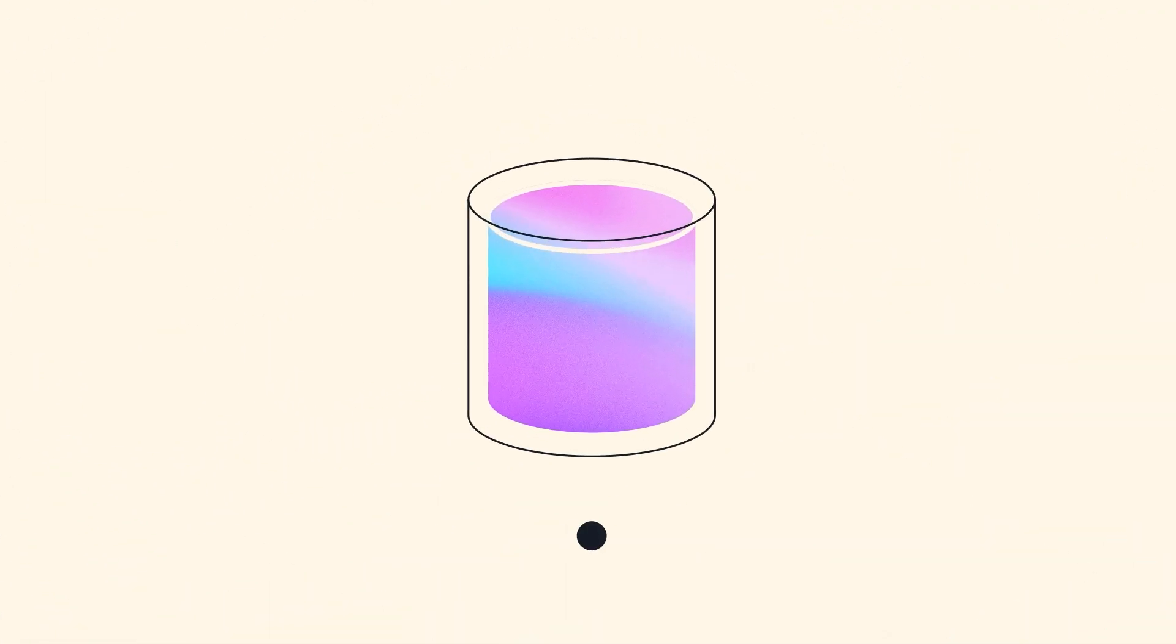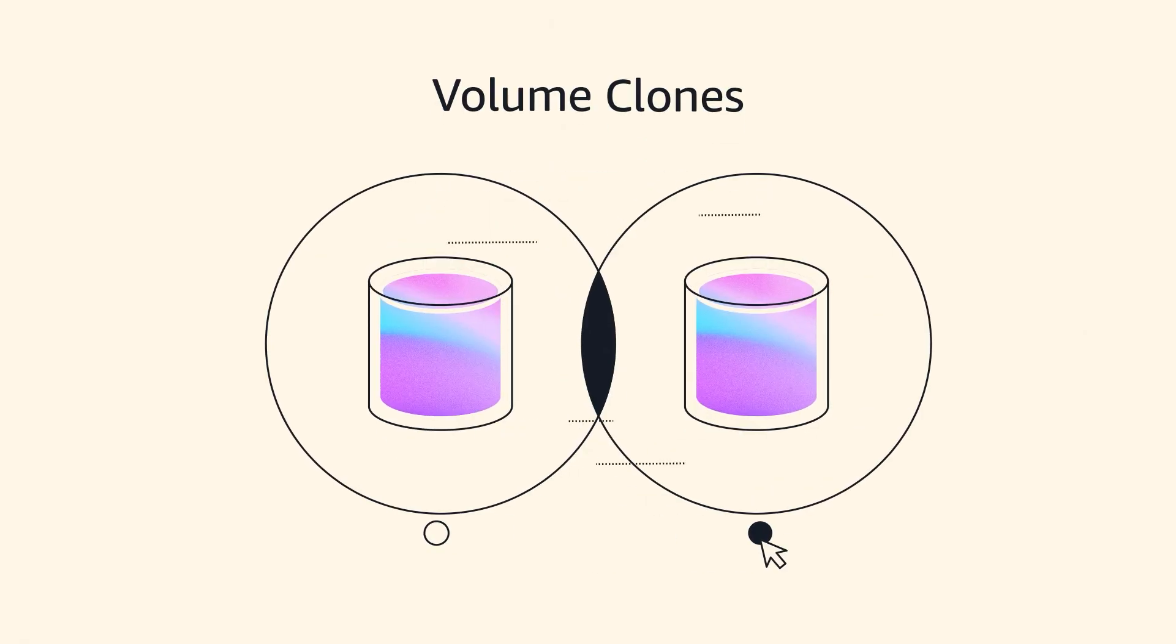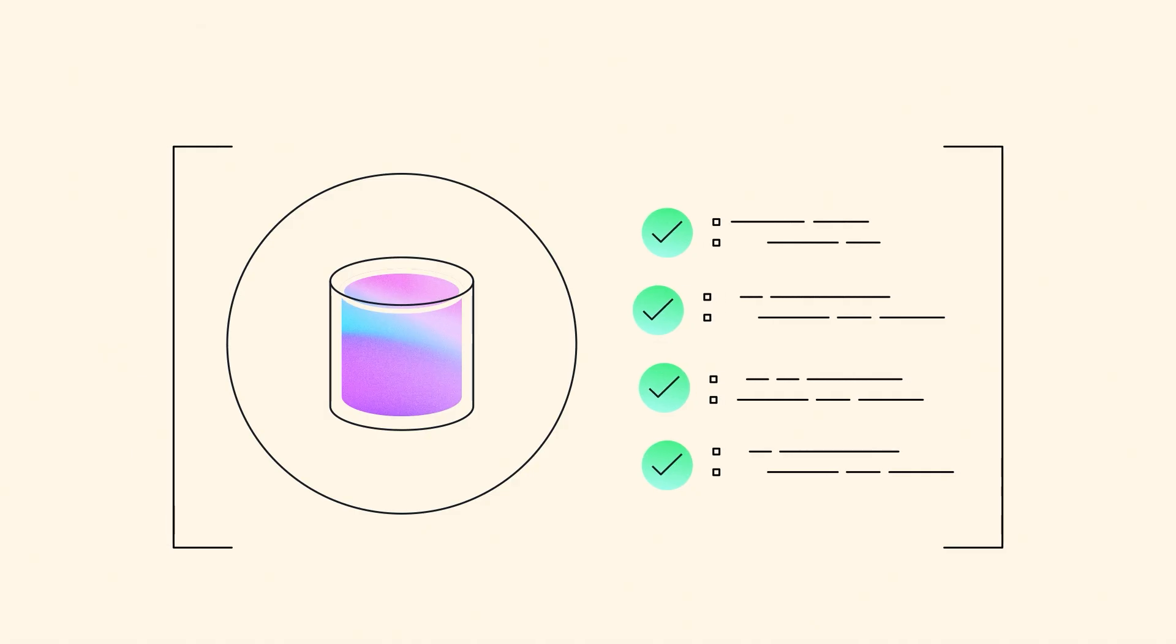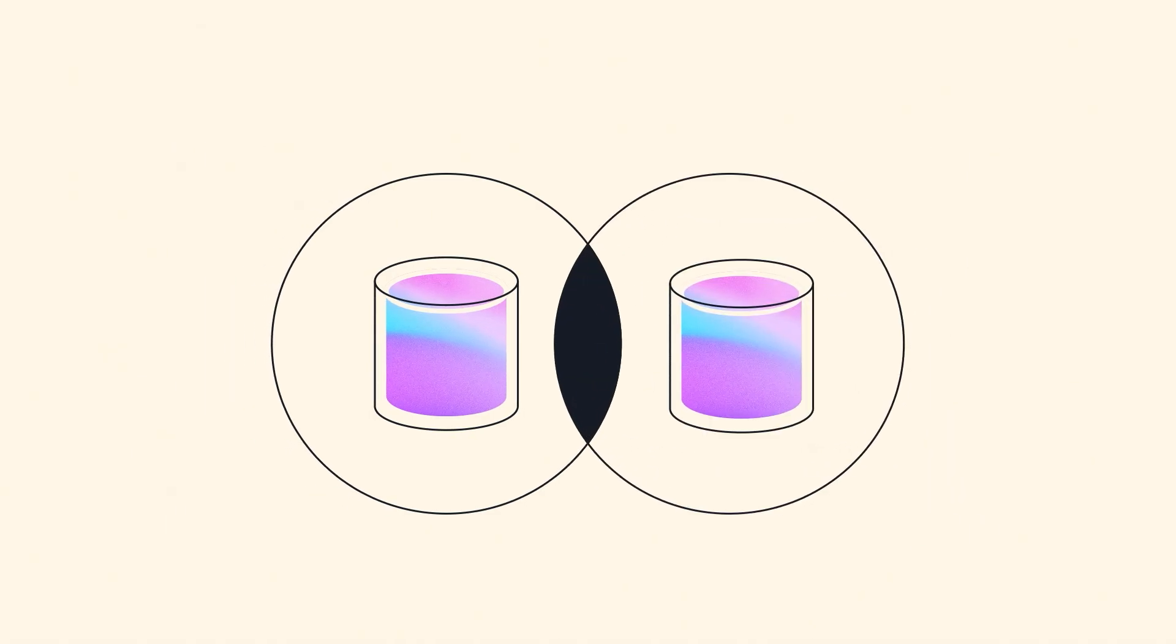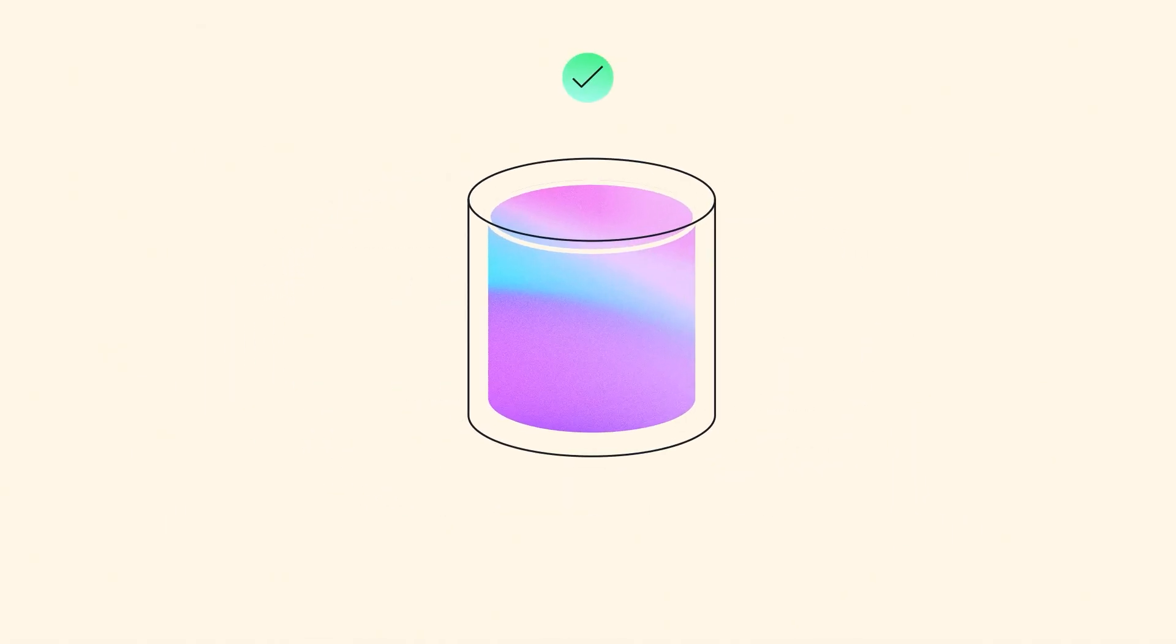Accelerate time to productivity. Use volume clones to create point-in-time copies of EBS volumes from production environments for development, testing, and troubleshooting. No need to wait for full snapshot restores. Volume clones are ready to go.